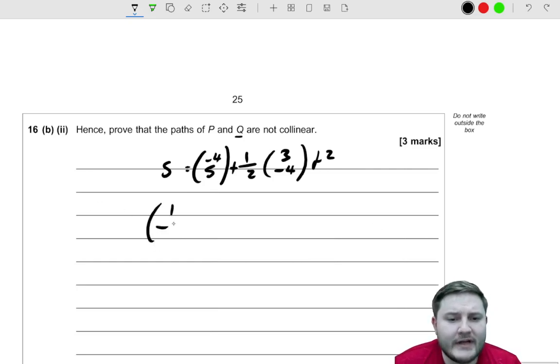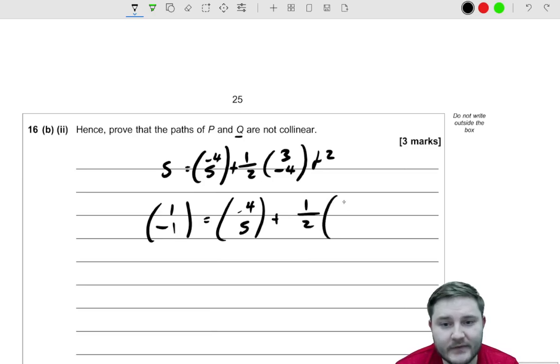So (1, -1) is equal to (-4, 5) plus a half (3, -4) T squared.